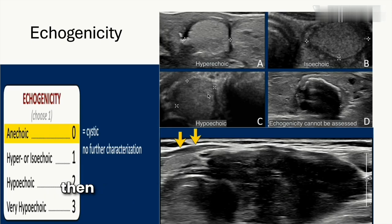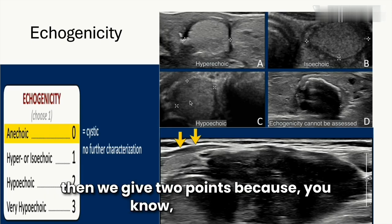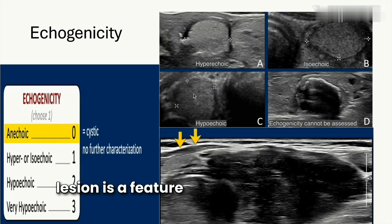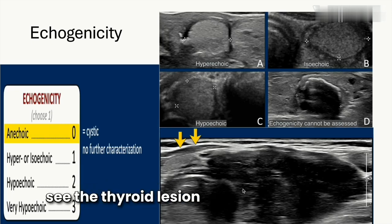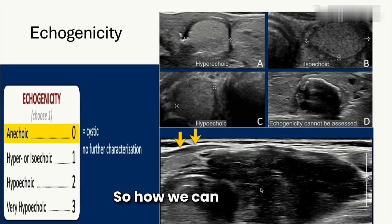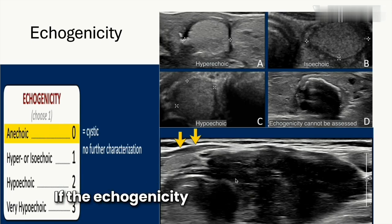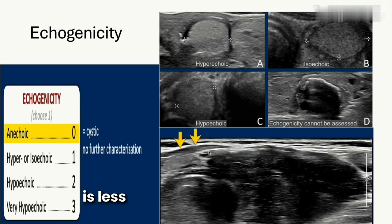If the thyroid lesion is hypoechoic, we give two points, because hypoechoic lesion is a feature of malignancy. In this image we can see the thyroid lesion is very hypoechoic. How do we determine it is very hypoechoic? If the echogenicity of the thyroid lesion is less than that of the adjacent muscles.